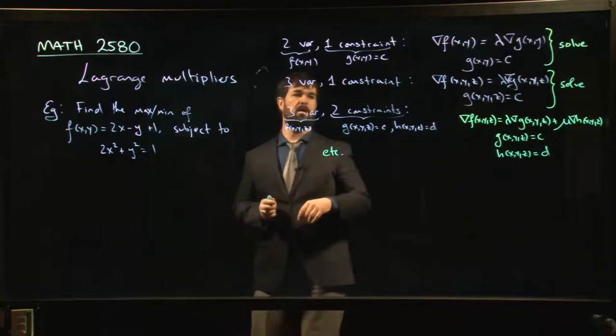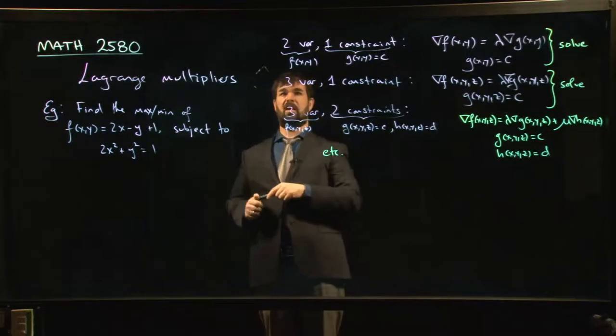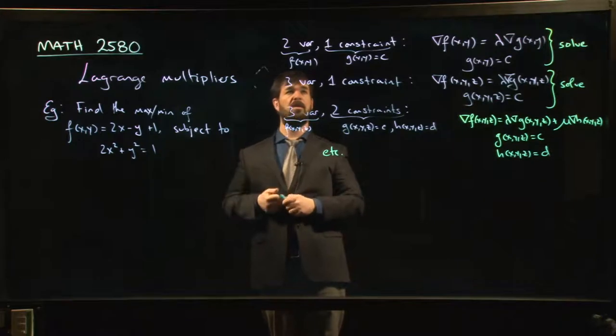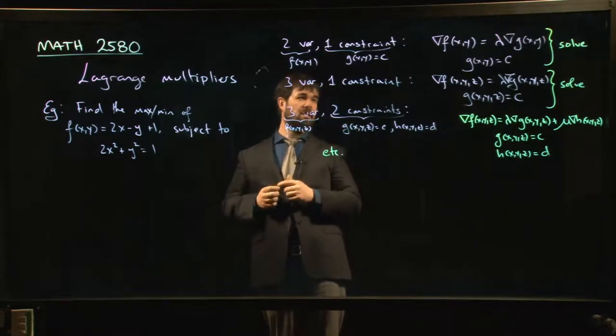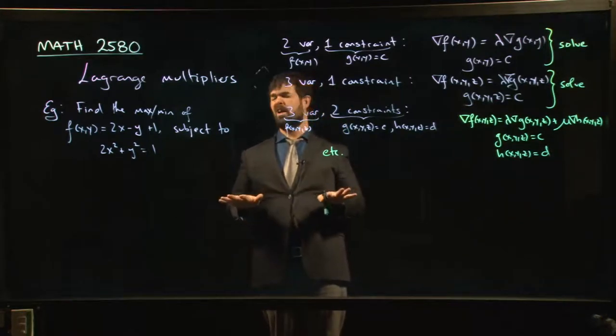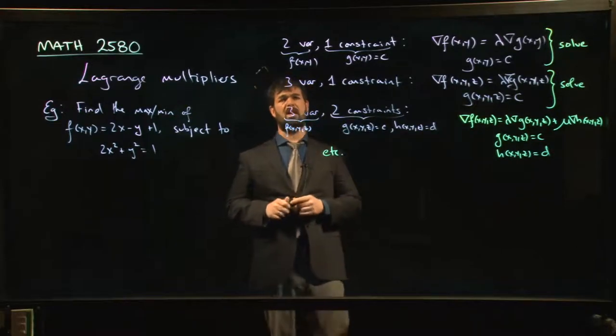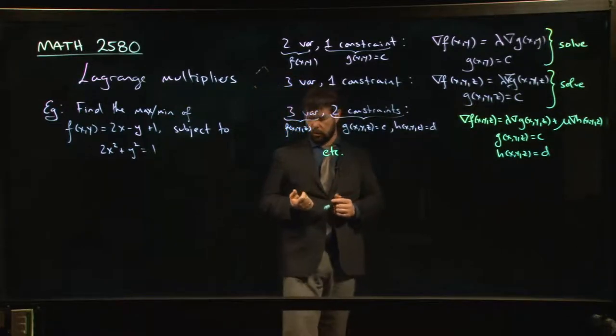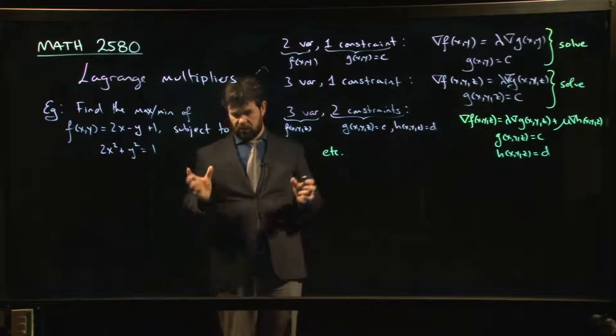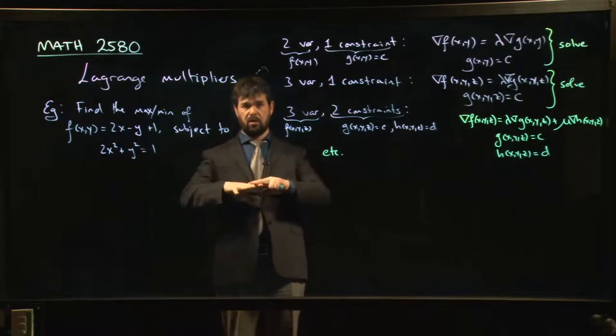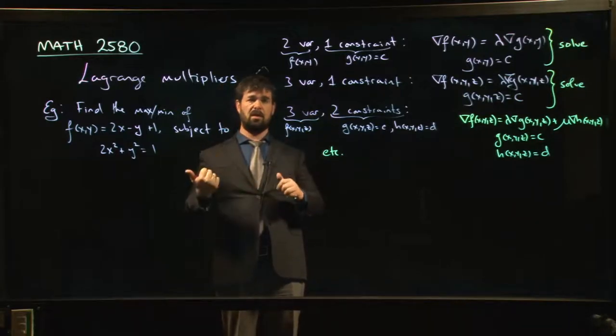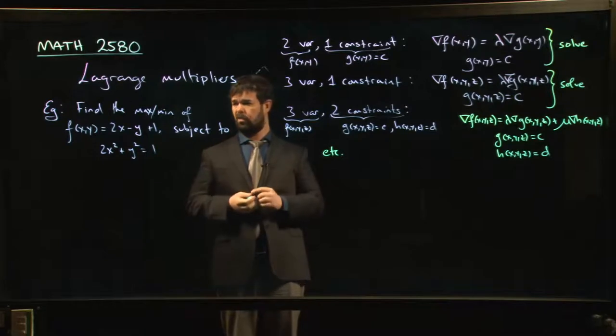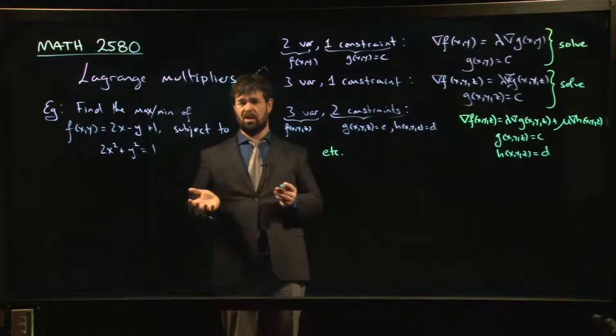We're going to stick primarily to the simplest case where you've got a function of two variables. You've got a single constraint. You can't have more than one constraint really if you've only got two variables. Because if you have two constraints, that's two level curves, meaning you're only considering points that lie on both curves. That pretty much restricts you to just looking at the points of intersection of those two curves.